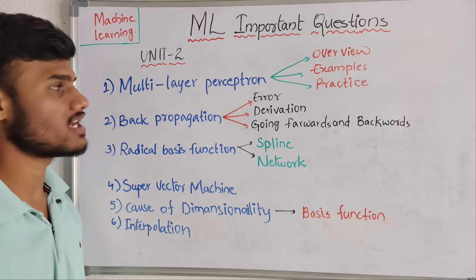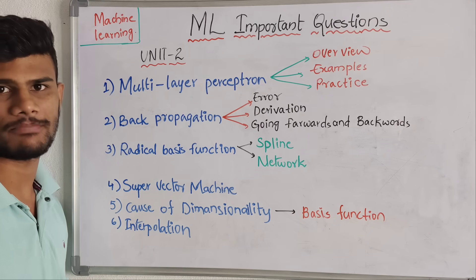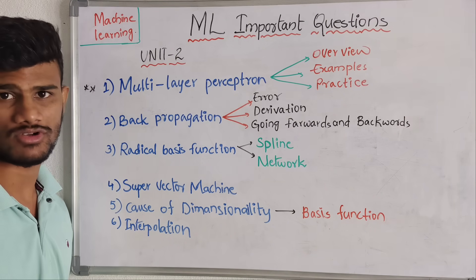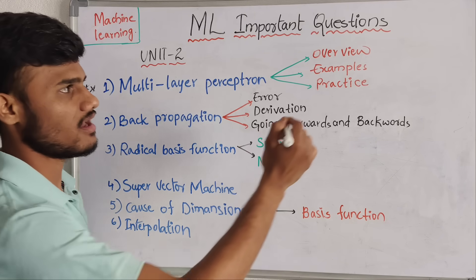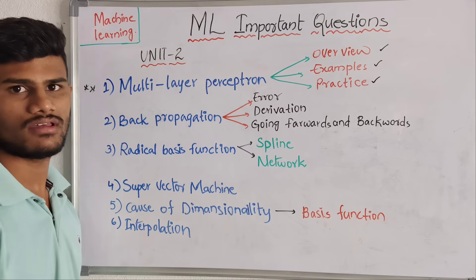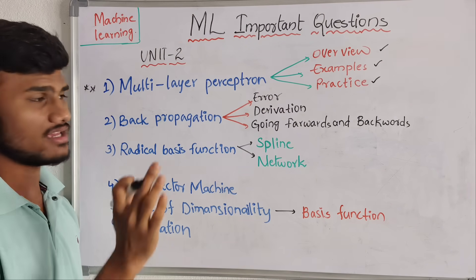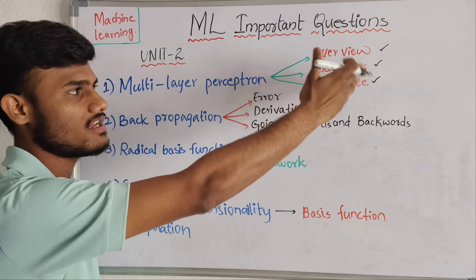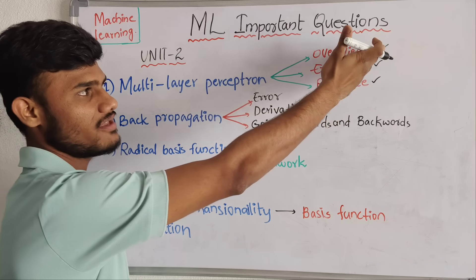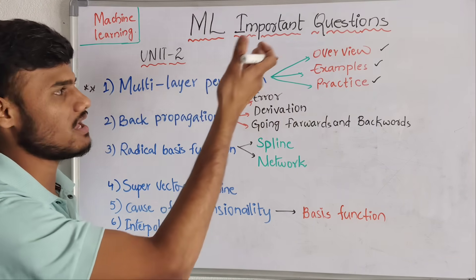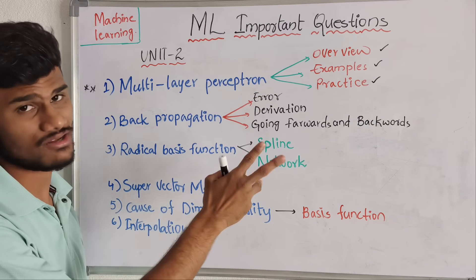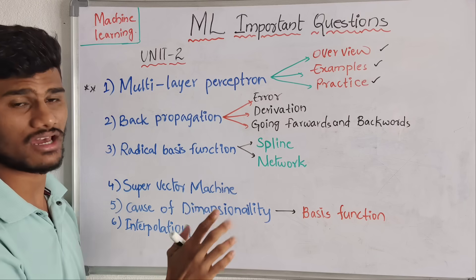Now coming to our second unit. In the second unit, the first question is Multilayer Perceptron. This is a basic question and also an important question. In this, we have overview, example, and practice. There are three types of questions but a single answer — if they ask any of these three questions, you can answer with a single answer.